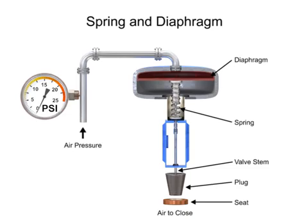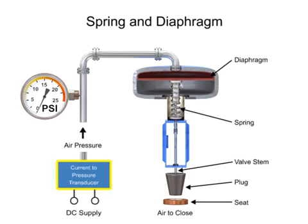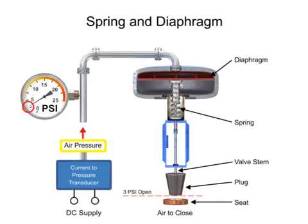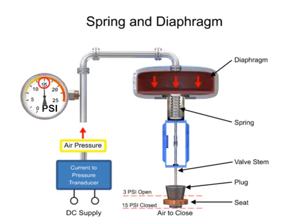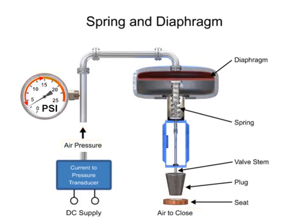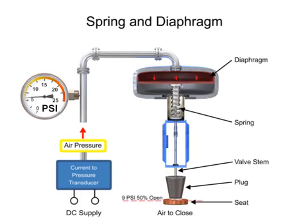To vary the position of the restrictor and flow through the valve, a current to pressure transducer can be used to provide a 3 to 15 PSI signal to the diaphragm. At 3 PSI, the valve is maintained open, and at 15 PSI, the valve is maintained closed. Pressures between the 3 to 15 PSI range proportionally change the flow of the valve. For example, a pressure of 9 PSI applied to the diaphragm moves the spring and valve stem to 50% of operating range.